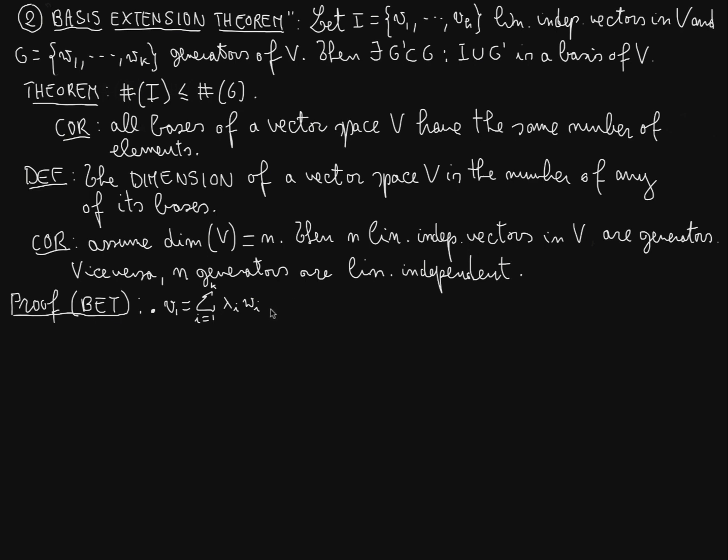Of lambda i w_i, this uses the fact that the set G is a set of generators. Certainly there will exist an index J such that lambda J is nonzero, because if they were all zeros then V1 would be the zero vector. But the zero vector cannot be in any set of linearly independent vectors as we noticed in the previous lecture.